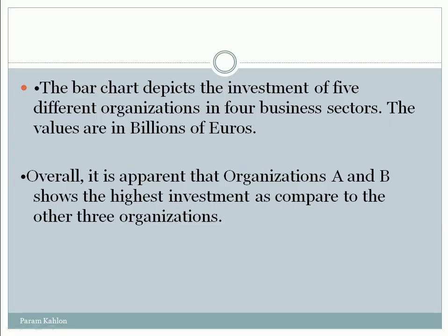The bar chart depicts the investment of five different organizations in four business sectors. The values are in billions of euros. Overall, it is apparent that organizations A and B show the highest investment compared to the other three organizations.